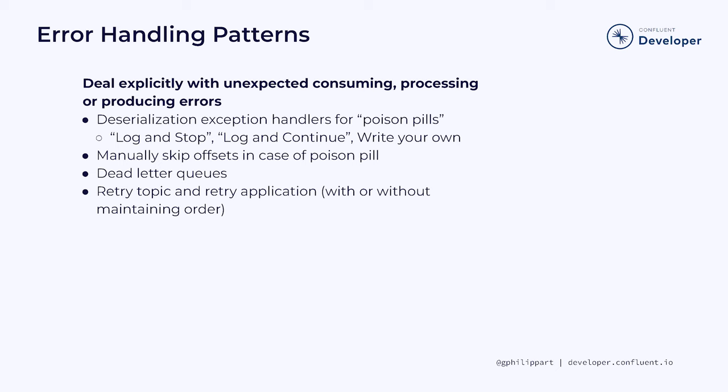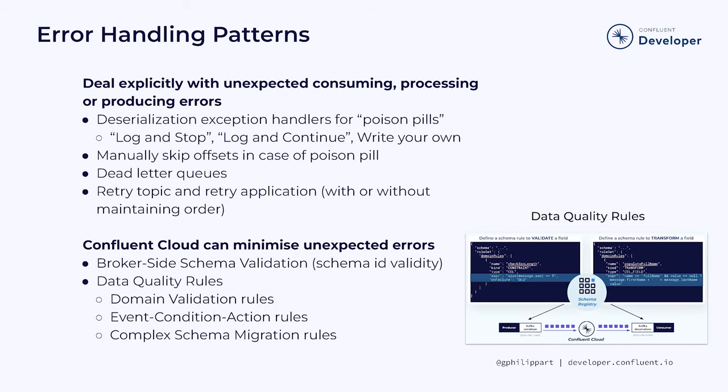If you want to guarantee that order, special care must be taken. There's a blog on confluent.io which describes how to do that — the link will be available in the course guide below. To get rid of these kinds of unexpected errors, Confluent Cloud has two great features: broker-side schema validation and data quality rules.